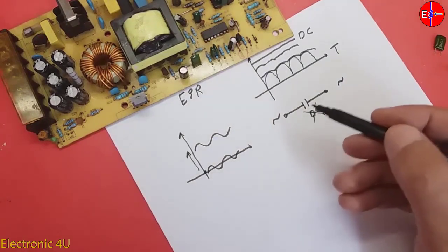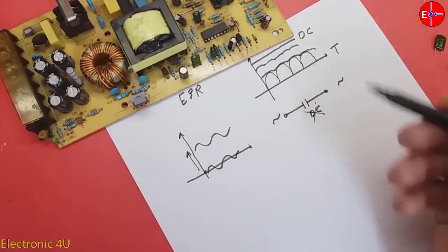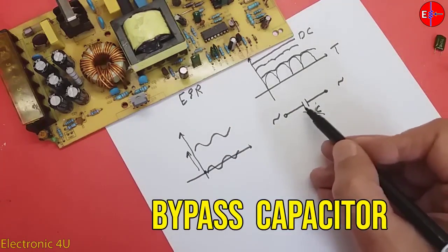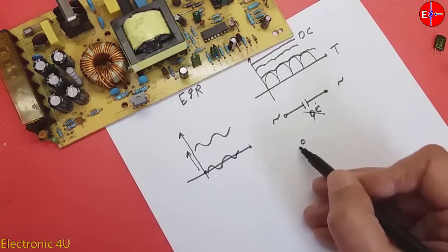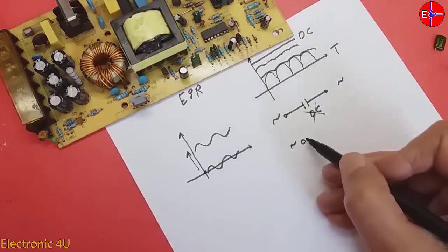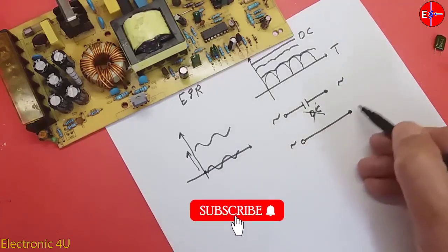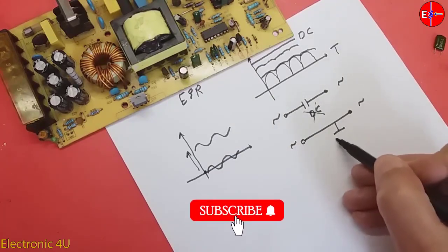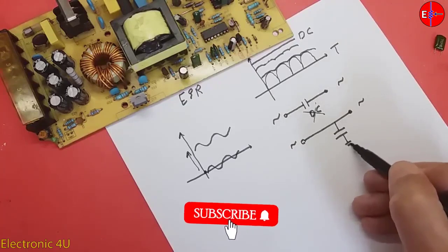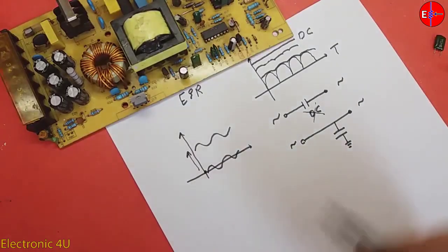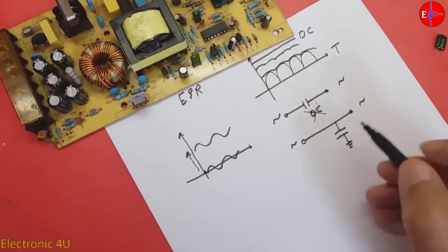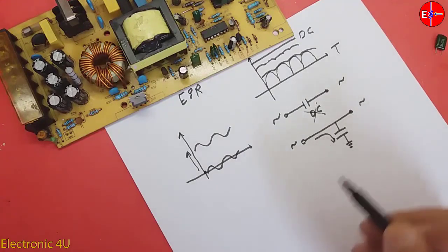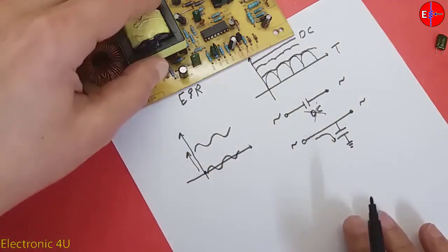Now, here is another capacitor called decoupling, which is also called bypass. The bypass capacitor is parallel, not series. This is the signal. Here is the output. Here is the bypass capacitor, which is usually connected to zero volts. It transmits high frequency signal or noise to the ground.